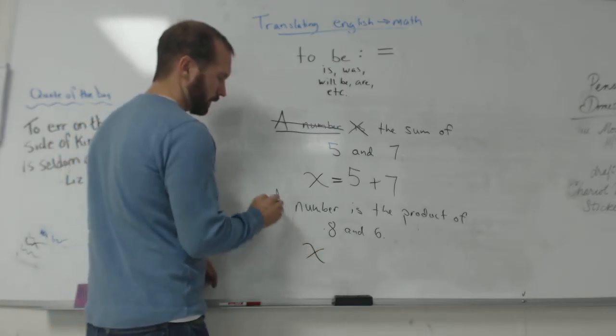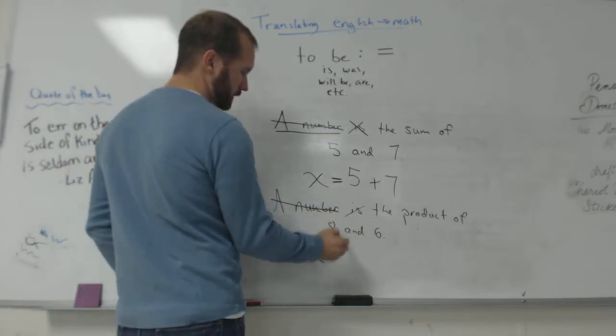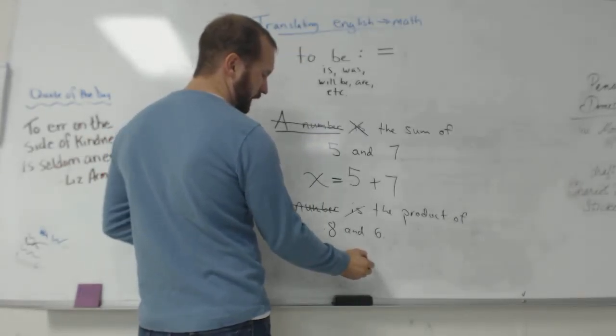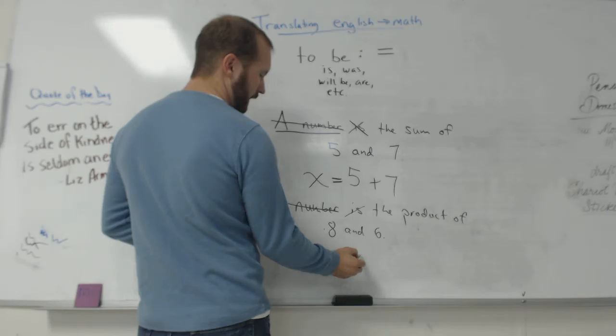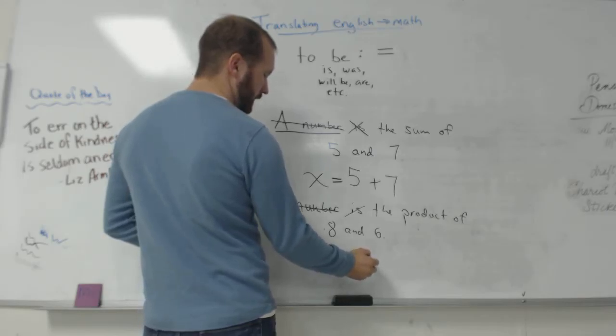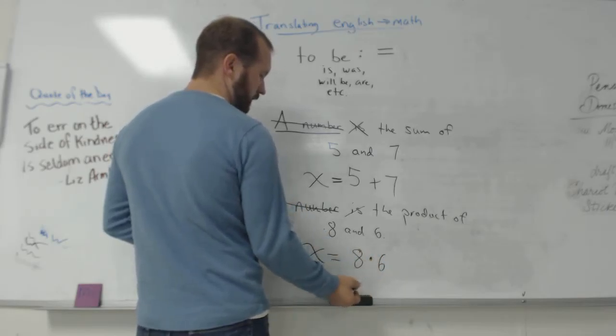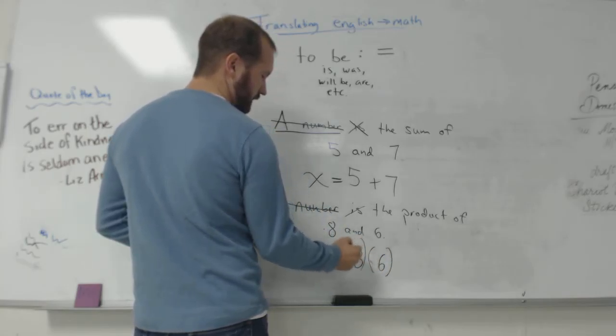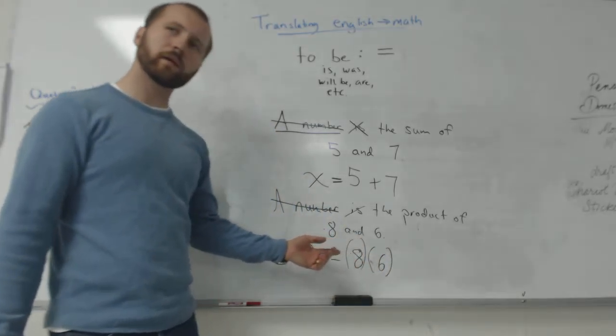X. Is. Equals. The product of. Okay, I know I will be multiplying. So I have eight times six. Or eight times six like this. Whichever way you want to write it.